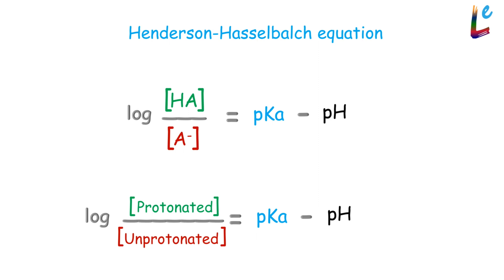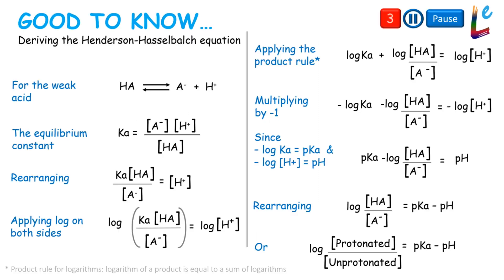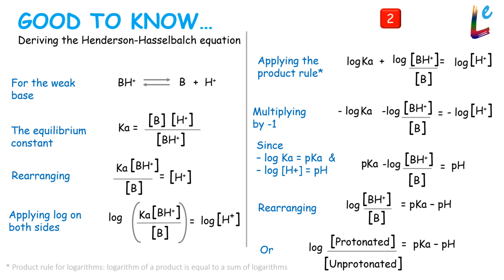Using pH and pKa, how did Henderson and Hasselbalch derive this equation? Pause this video to see that. This is the Henderson-Hasselbalch equation derived for a weak base.